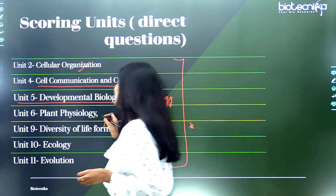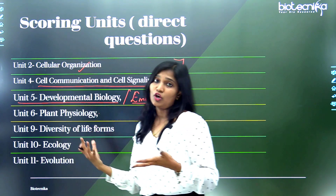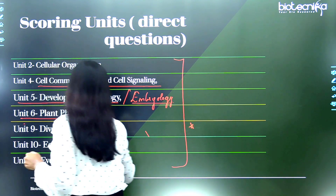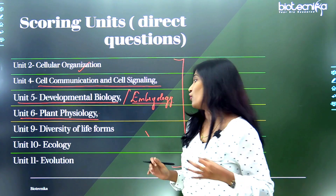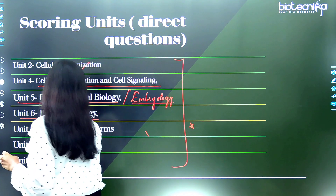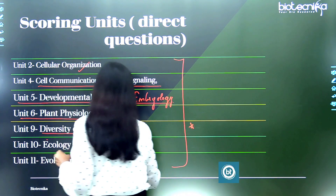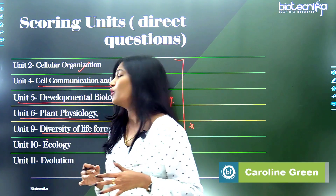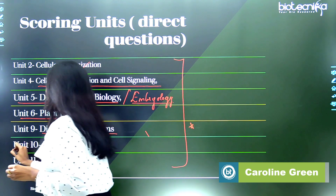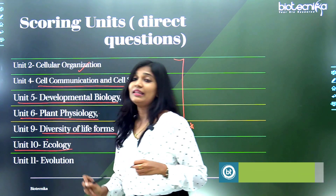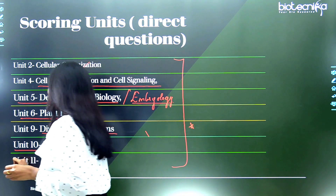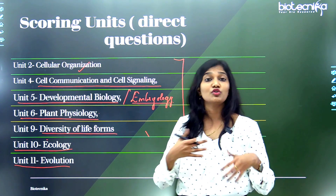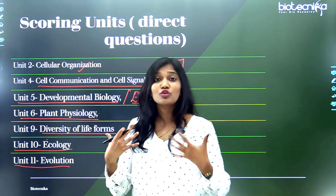Next is plant physiology, or system physiology in plants — another scoring unit with direct questions. Very important. After that is diversity of life forms — in this unit too, you get direct questions and it is a scoring unit. Finally, ecology, unit ten, and evolution are also units from which direct questions come and which are scoring chapters.